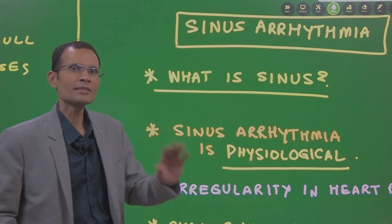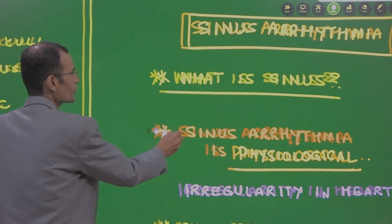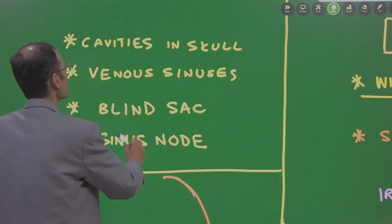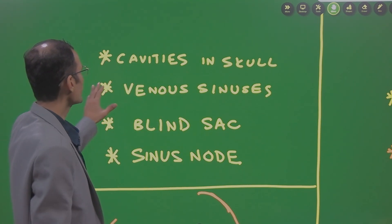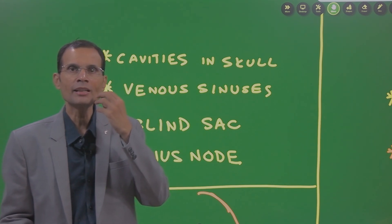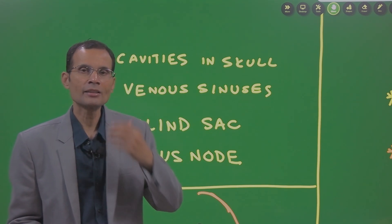What is sinus? There are lots of meanings of this word sinus. It is used in various contexts. For example, sinus means there are cavities in the skull like maxillary sinus, frontal sinus, etc.